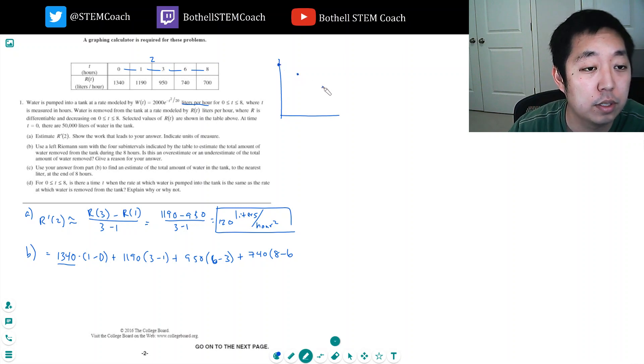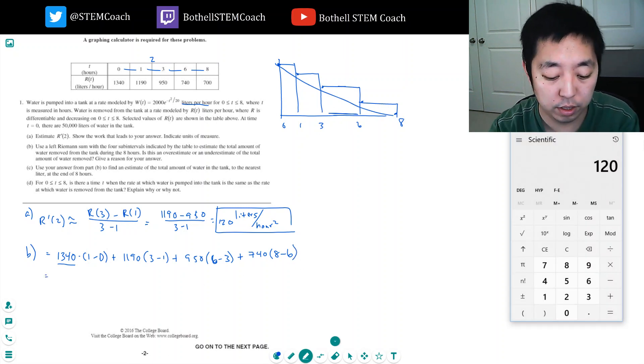If I were to plot this data, for example (0, 1340), it would look kind of like this curve, and we're doing these rectangles. The rectangles have different widths because the intervals are 0, 1, 3, 6, 8. So we're doing the width of each rectangle times the height of each rectangle.